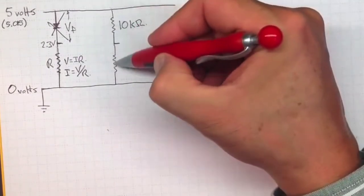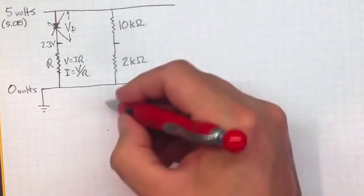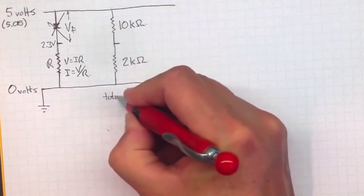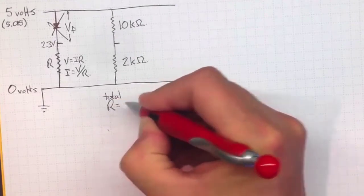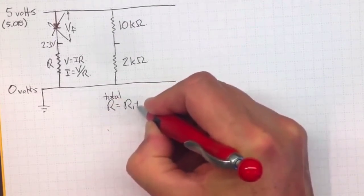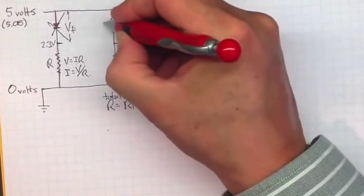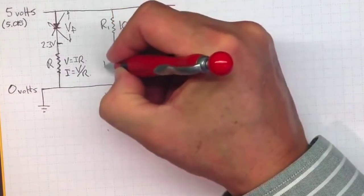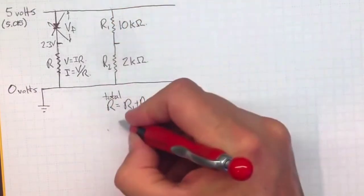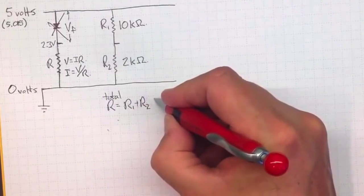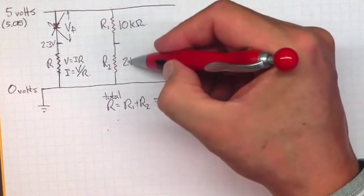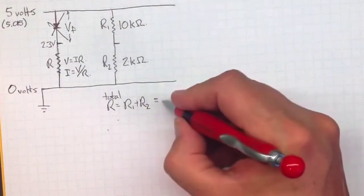These resistors are in series, so the resistance is added. So the total R is R1 plus R2, if we make that R1 and that R2. So in this case the resistance is then 10 plus 2 is 12,000 ohms.